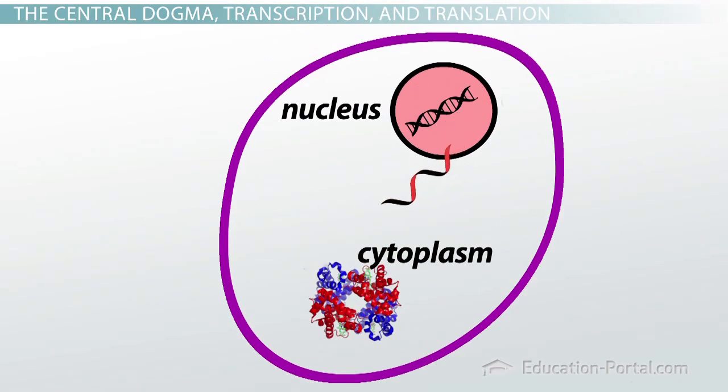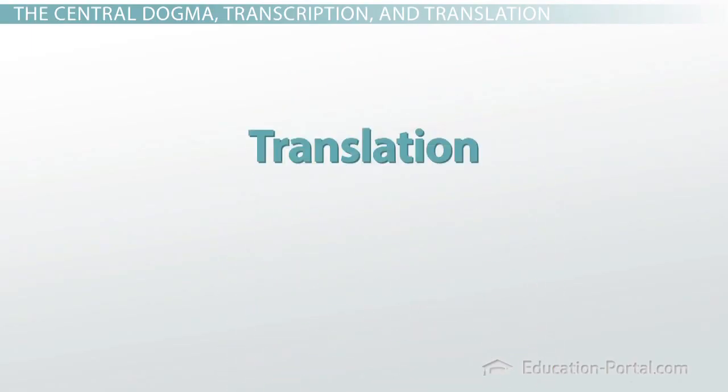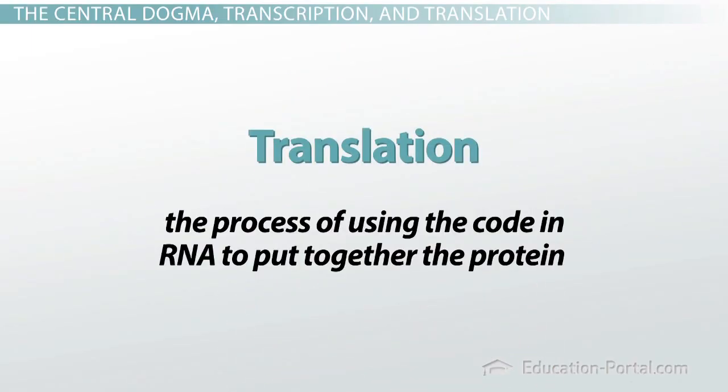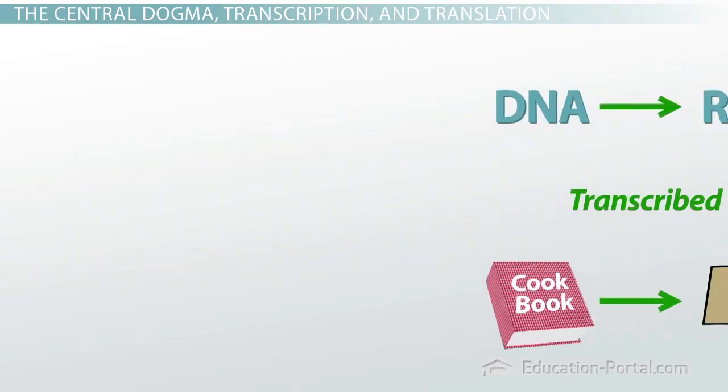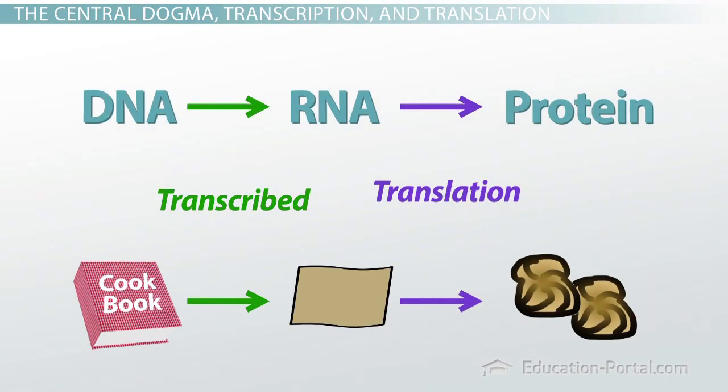Transcription occurs inside the cell's nucleus, and then RNA leaves to go do the next step. The next step is called translation. It's the process of using the code in RNA to put together the protein itself. In my French toast story, this would be the actual making of the French toast in my kitchen. The RNA code is like my recipe card, and the protein is like my French toast.